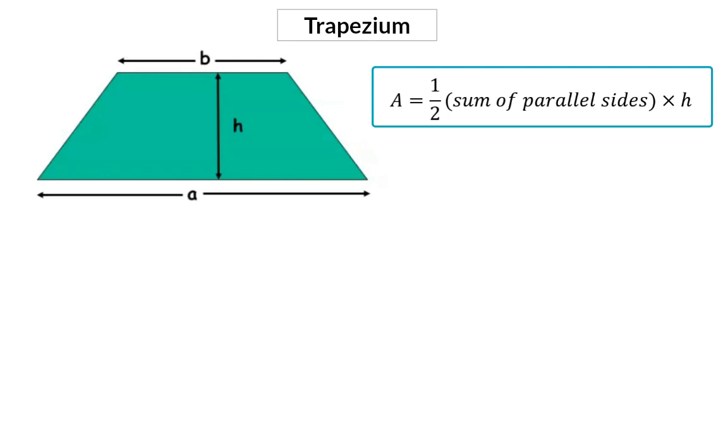We could have also formed this formula by dividing the trapezium into two triangles. For the top triangle, the formula is half times the base, which is B, multiplied by the perpendicular height. And then to that, we need to add the area of the bottom triangle, which is half of its base of A, multiplied by the same height.